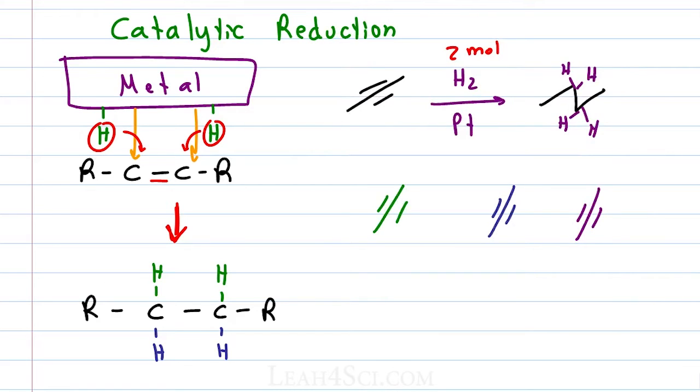Because imagine the situation where you start with three alkynes and you're thinking if I only use three moles of H2 gas then each alkyne will have one H2 added and I will get an alkene product. That is not the case because it's not easy to control and the product will be random.